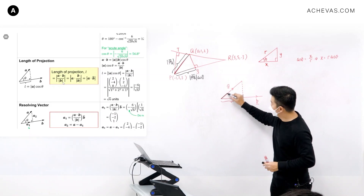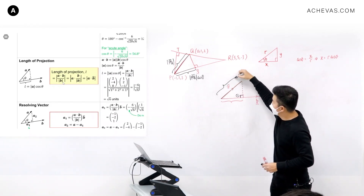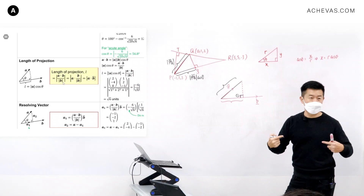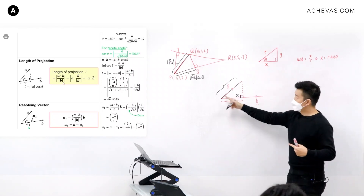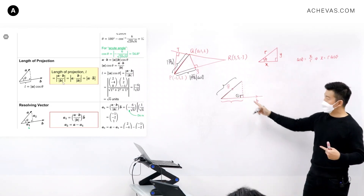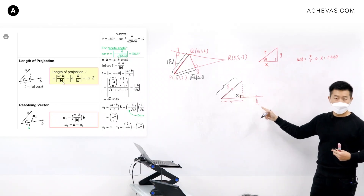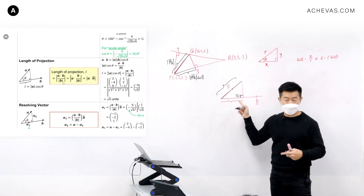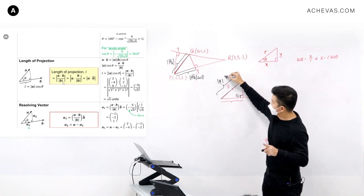The second thing: I need to make sure that the hypotenuse is something that is known to me. Since for the scenario given, I am given vector A and vector B, do I know the hypotenuse? Yes — because the hypotenuse is the modulus of A. So that is the second thing.